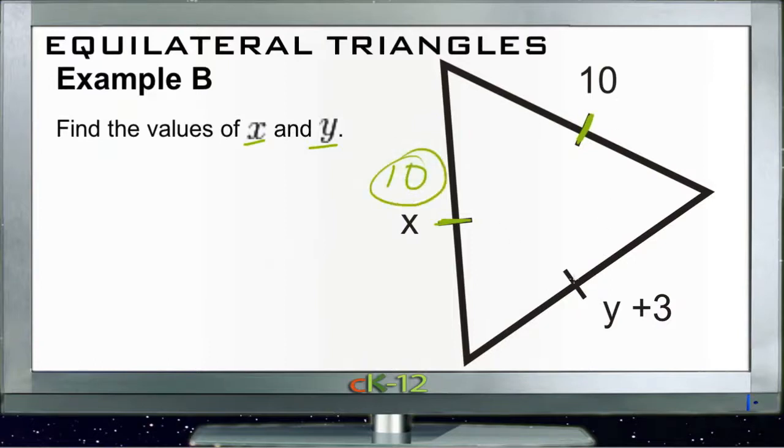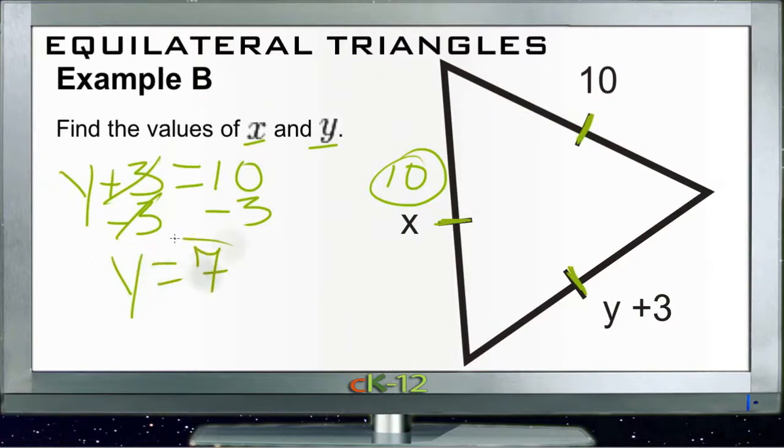And then y plus 3 needs to be the same thing as either one of those. So y plus 3 is the same thing as 10. Y plus 3 exactly the same thing as 10. Subtract 3 from both sides and we get y equals 10 minus 3 which is 7. So y is 7 and x is 10.